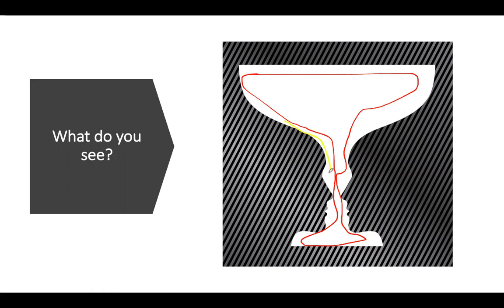You see this silhouette of a face — eyes here, nose, lips, and then chin. And then the same on the opposite side: forehead, eyes, nose, lips, chin, and neck.